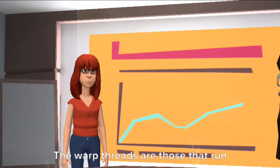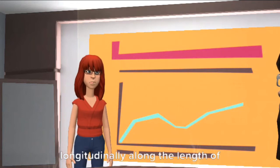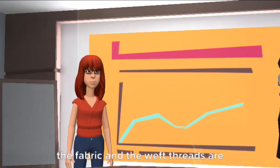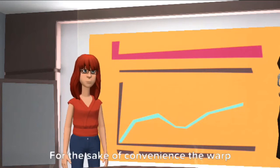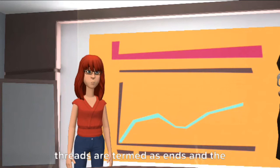The warp threads are those that run longitudinally along the length of the fabric, and the weft threads are those that run transversely across the fabric. For the sake of convenience, the warp threads are termed as ends and the weft as picks or fillings.